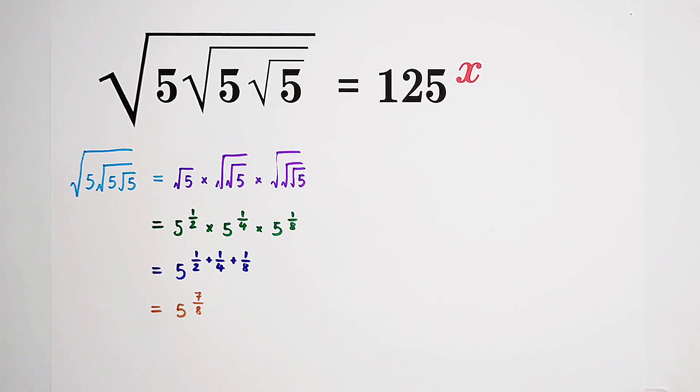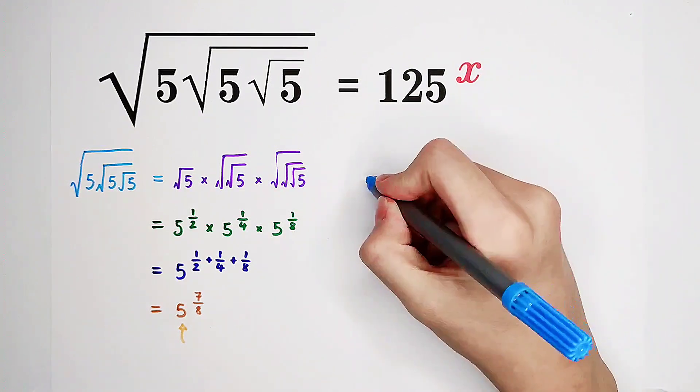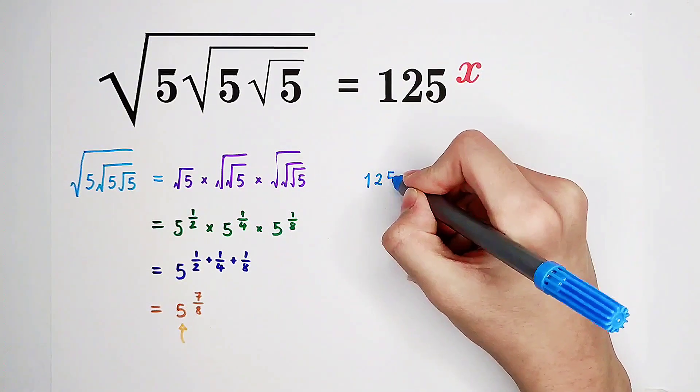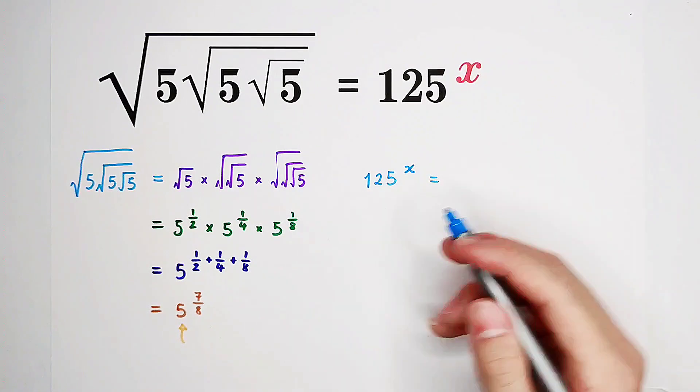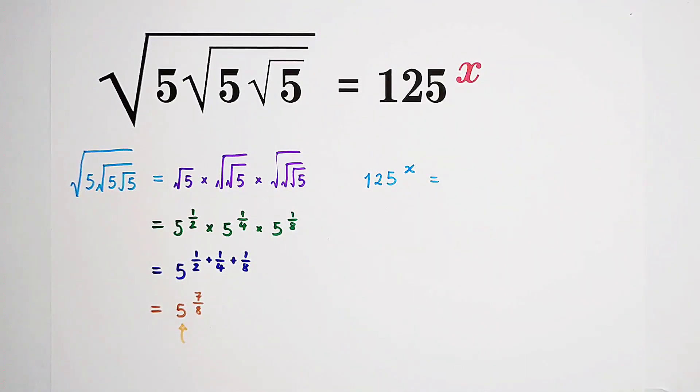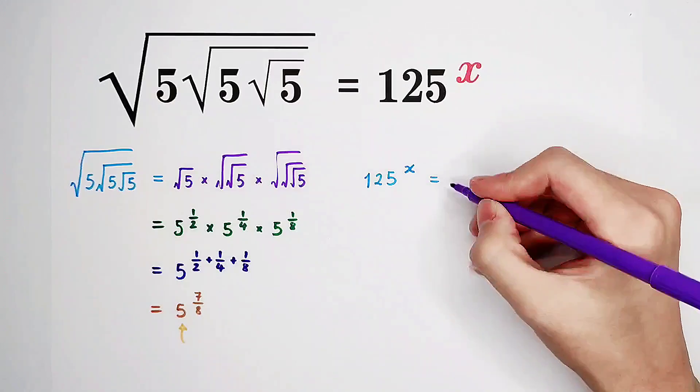So that means the left side can be written in exponential form with base 5. What about the right-hand side? 125 to the power of x. 125 is just 5 cubed, so it is 5 cubed to the power of x.